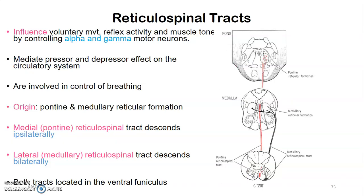The reticulospinal tract influences voluntary movement, reflex activity, and muscle tone by controlling alpha and gamma motor neurons. It mediates pressor and depressor effects on the circulatory system and controls cardiorespiratory and vasomotor function via the reticular system. Originating at the reticular formation — nuclei at the brain stem — the pontine and medullary nuclei form the reticular formation. The medial or pontine reticulospinal tract descends ipsilaterally, while the lateral or medullary reticulospinal tract descends bilaterally; both are located in the ventral funiculus.